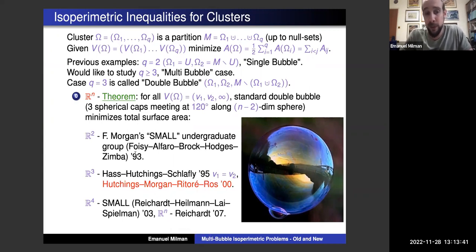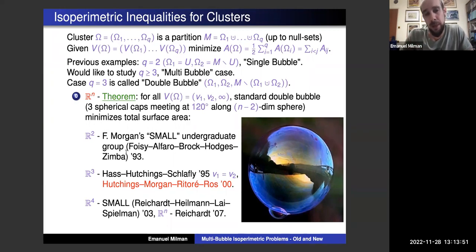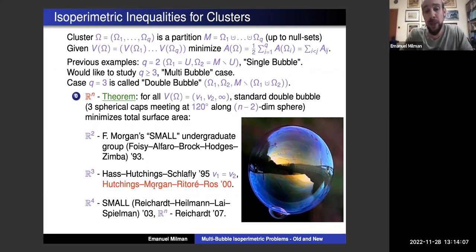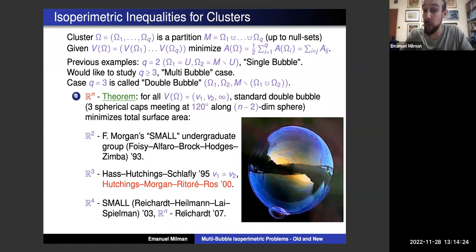Historically, this was first proved in the plane by Frank Morgan's undergraduate group in the early 1990s. The three-dimensional case was a major breakthrough by Hass, Hutchings, and Schlafly for the equal-volume case, and the full resolution in ℝ³ came in an Annals paper by Hutchings, Morgan, Ritoré, and Ros in 2000. Their method was extended to ℝ⁴ and later ℝⁿ by Reichardt and collaborators. This is now completely resolved in ℝⁿ.